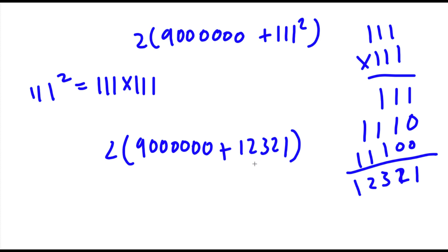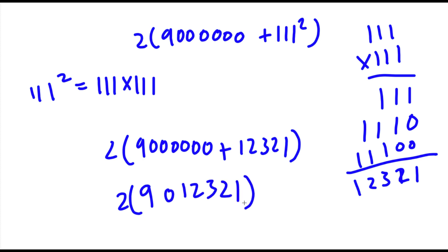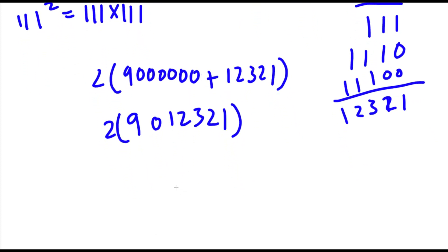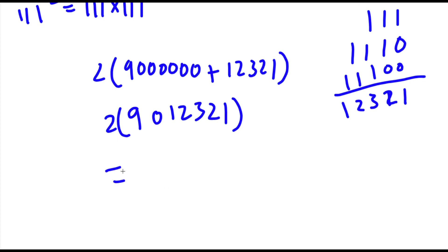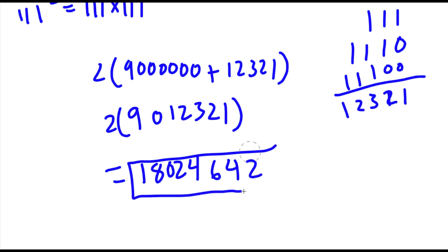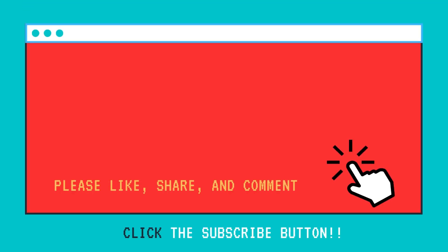Now 9,000,000 plus 12,321. So 2 times 9,012,321 is going to equal 18,024,642. So this is our answer — 18,024,642.